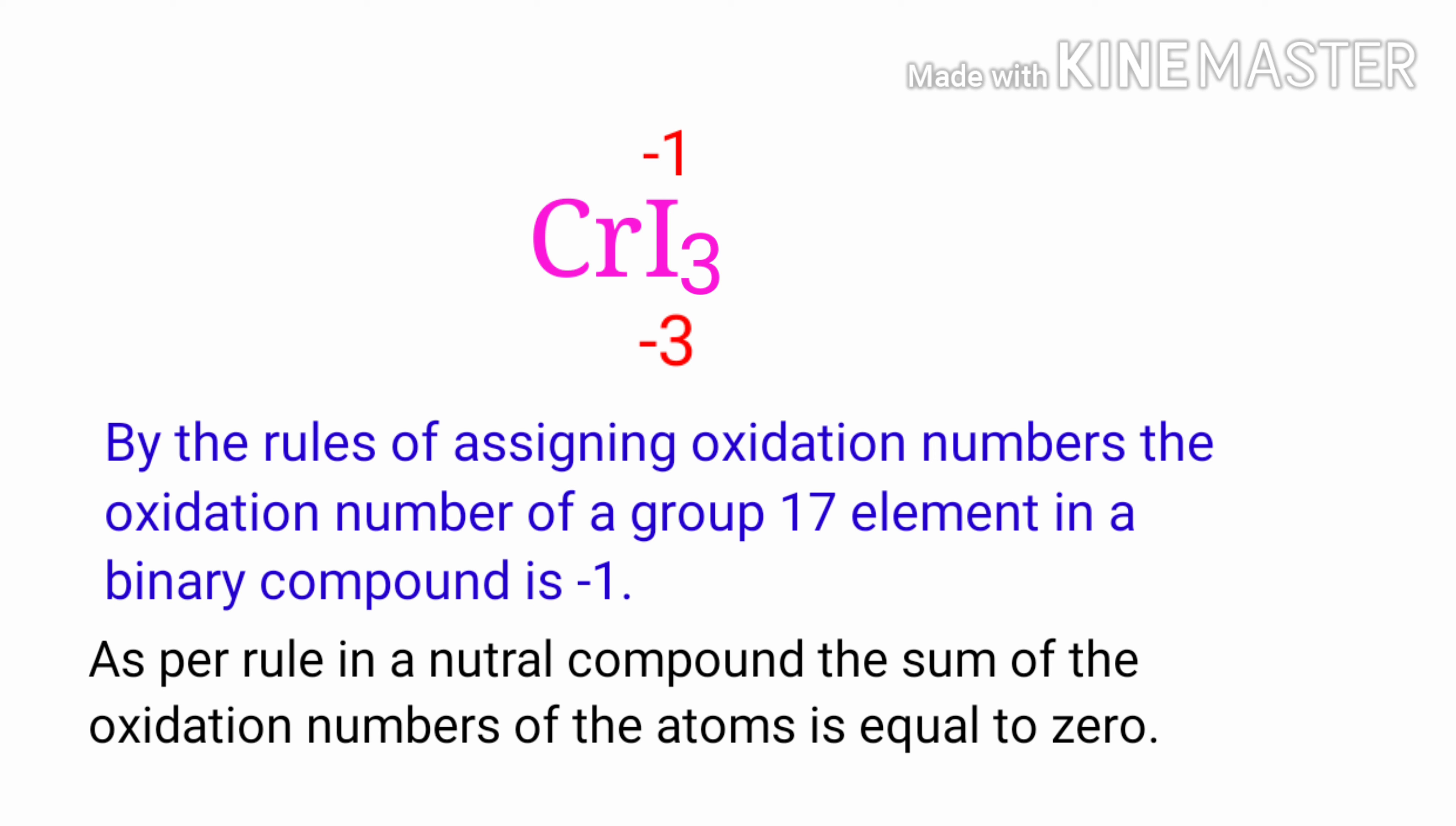In a neutral compound, the sum of the oxidation numbers equals zero. So the numbers along the bottom must add up to zero, meaning the number under Cr must be plus three. Therefore, the oxidation number of chromium is plus three.